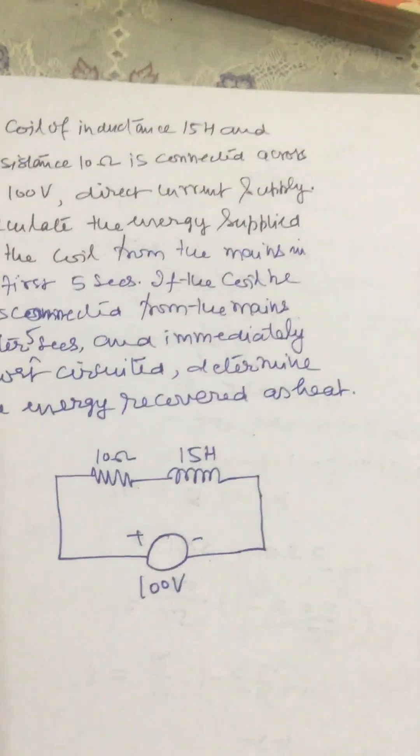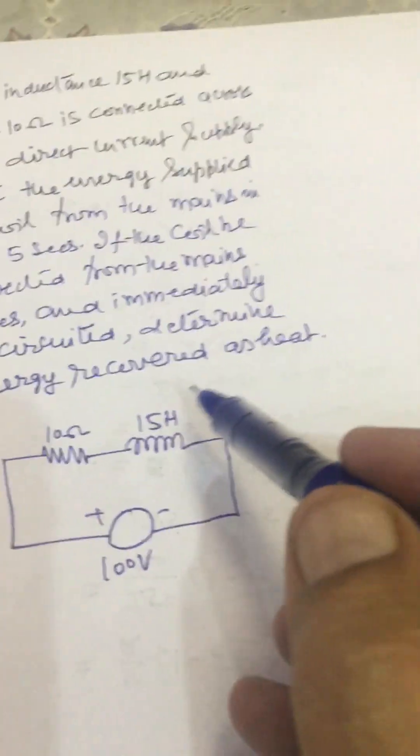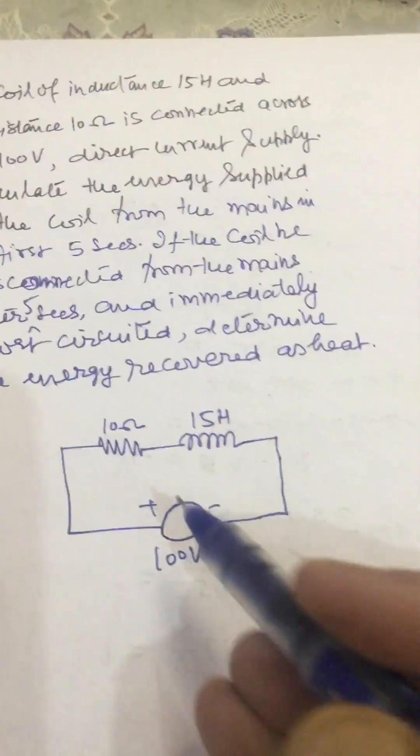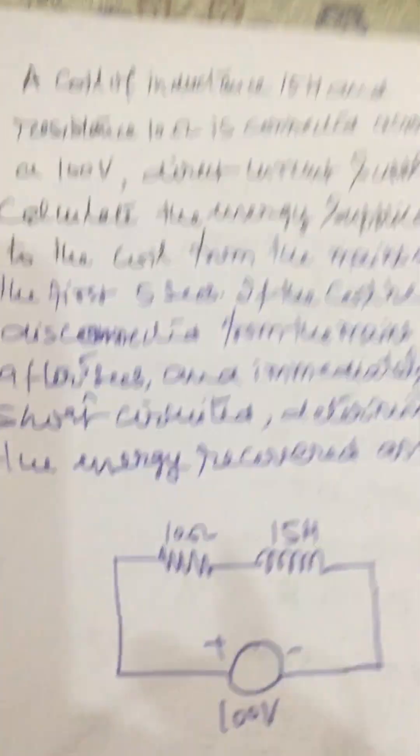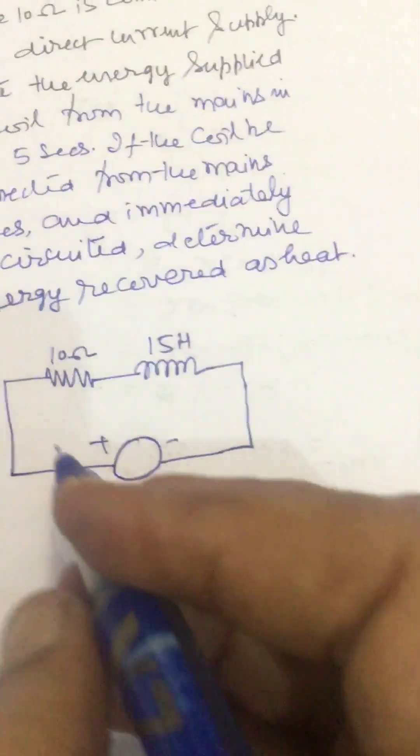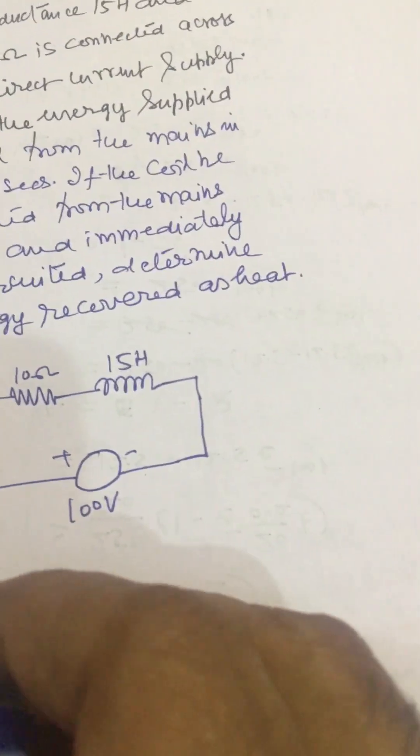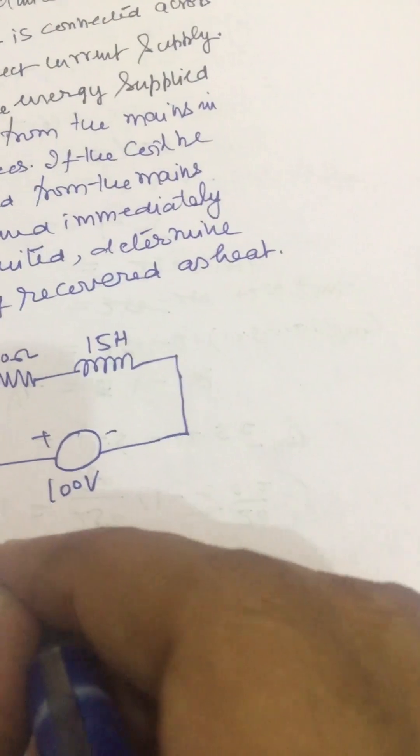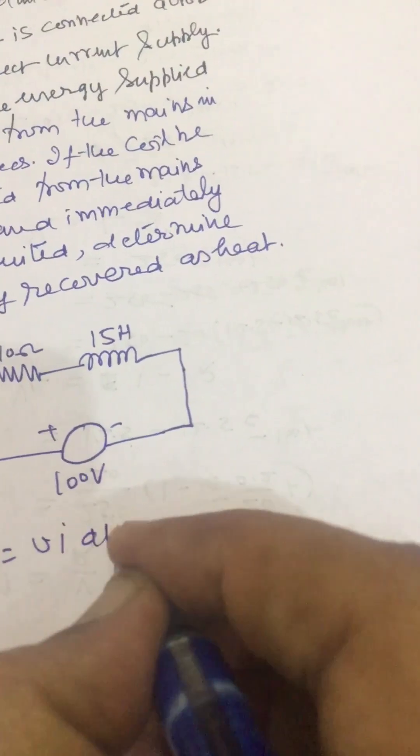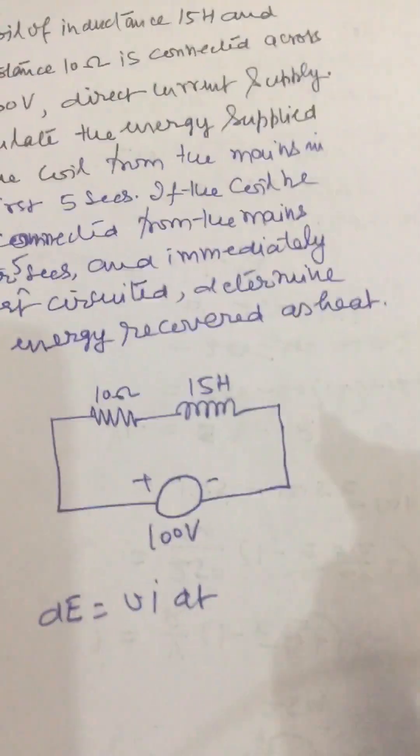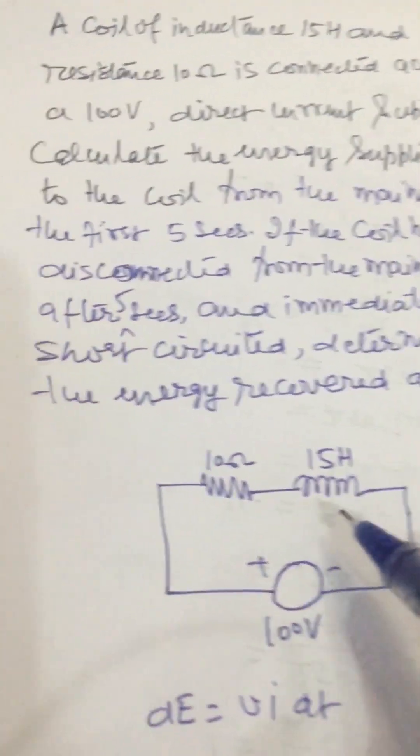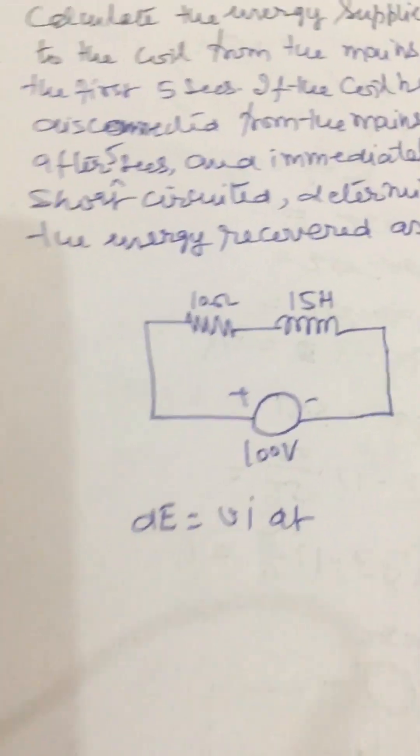We have to find out the energy supplied to this coil in first 5 seconds. Energy supplied dE will be V i dt, where V is the voltage and I is the current. This is our RL circuit.